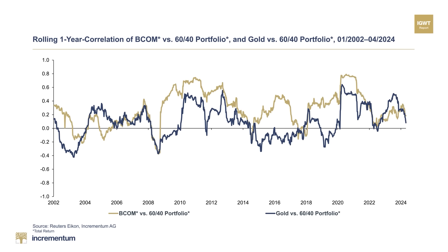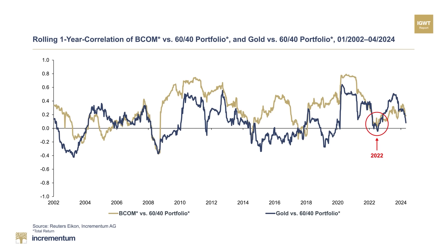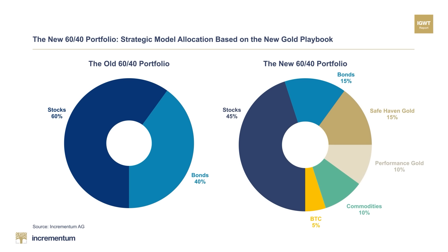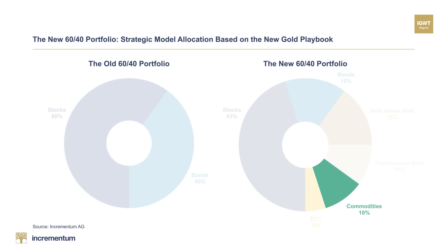Gold and commodities hold a significant advantage over equities and bonds because they carry no default risk, a benefit that is particularly relevant in the current challenging interest rate environment. The integration of alternative asset classes therefore offers sensible diversification of the portfolio, not least due to their low correlation to equities. In addition to gold, there are other beneficiaries of the new set of rules: commodities, which have risen from pawns to anchors of stability in the portfolio, and Bitcoin as a new piece that is establishing itself on the playing field.